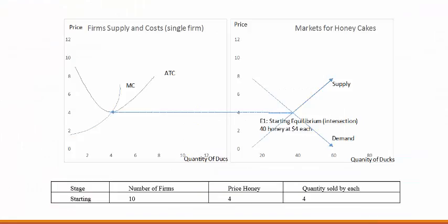So let's quickly start with this. Let's assume that initially there were 10 firms in the market. The price of the honey was 4 and the quantity sold by each firm was 4. So in all there were 40 quantity being traded at a price of 4, which you can see on the northeast side of your screen. On the left side of your screen you will see that the firms were producing at the minimum of their ATC, and the average total cost and the price at which they sold were equal. So they were not making any profit.